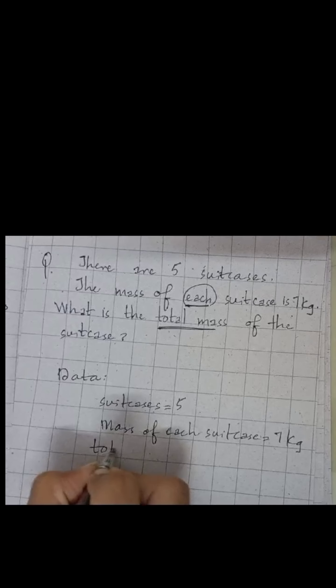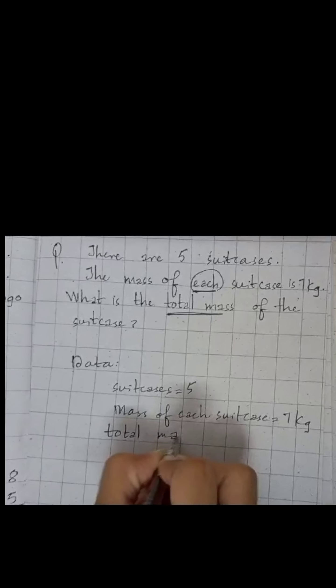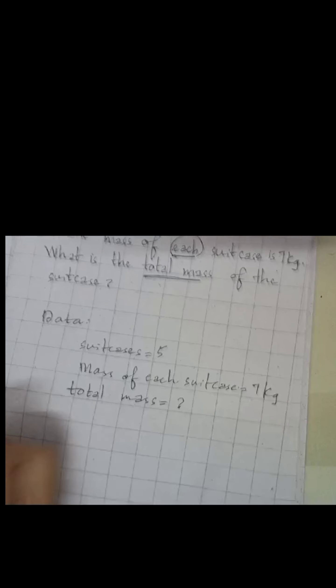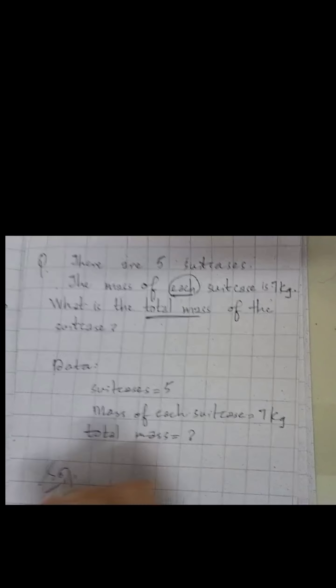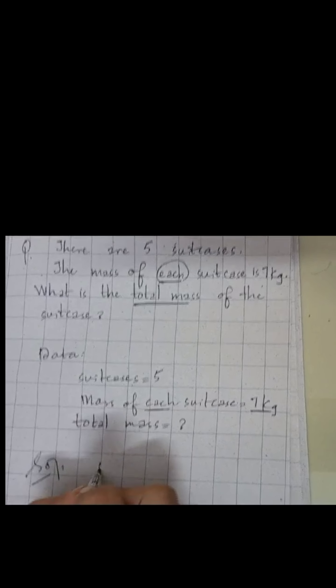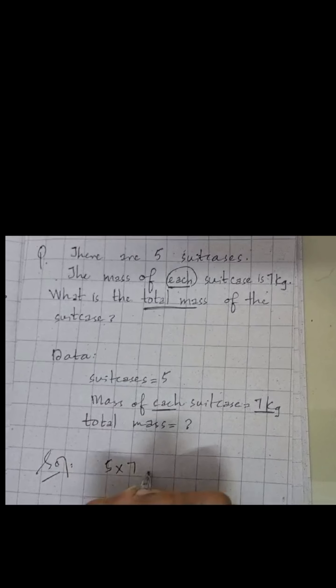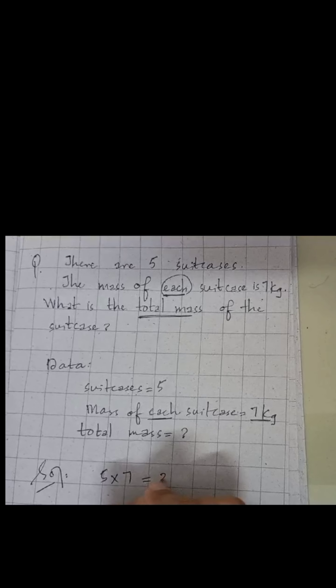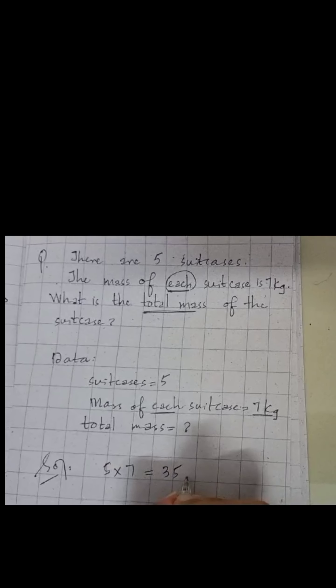You have to find the total mass of the suitcases. Whenever we know each and we have to find the total, we have to do multiplication. That is 5 times 7 equals 35 kg.